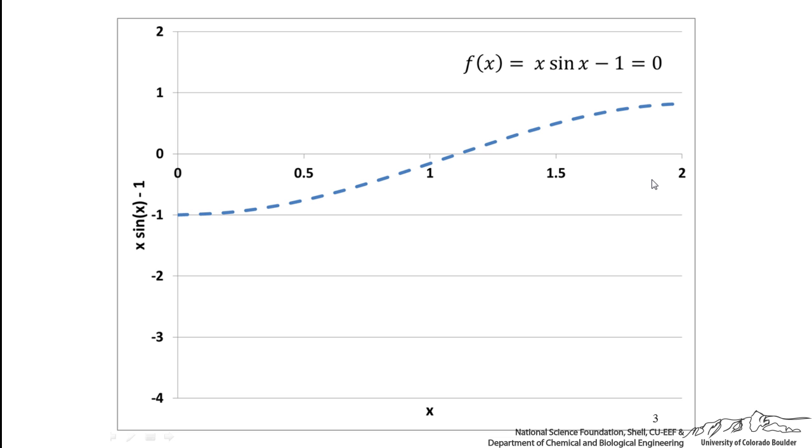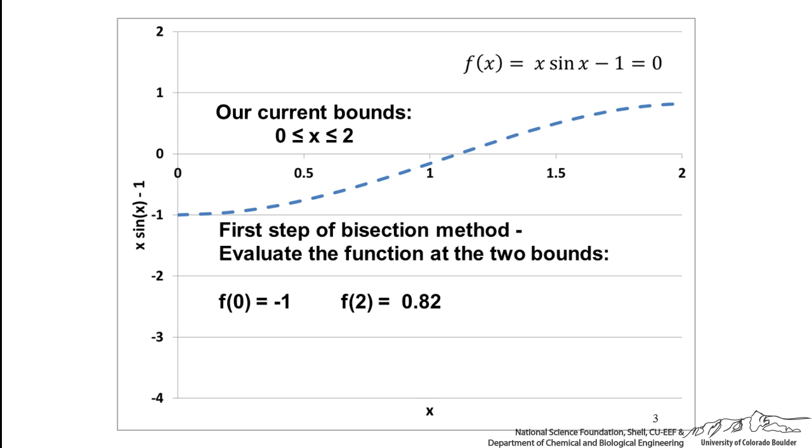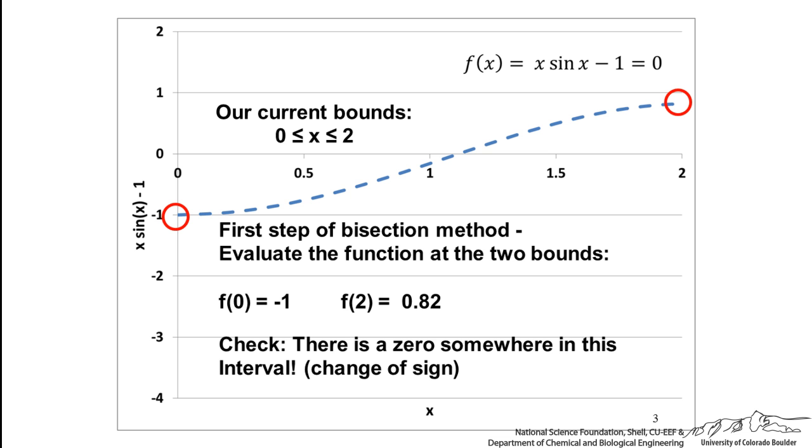Now the bisection method, you first start out with your bounds. You always have a low bound and an upper bound. The first step of the bisection method is to evaluate the function at the two bounds. f is negative 1, f is 0.82. Now we can check. This is very important because in bisection, you want there to be a zero somewhere in this interval.